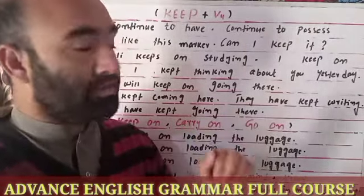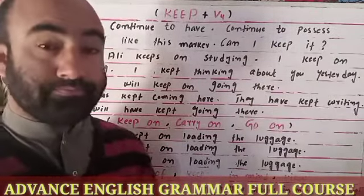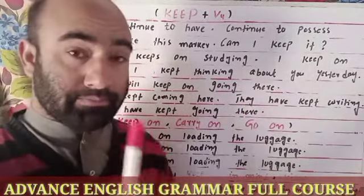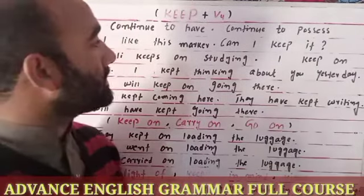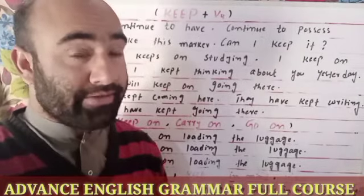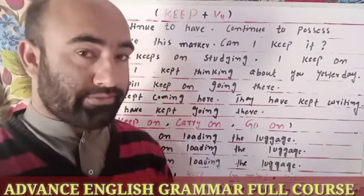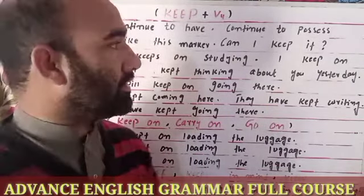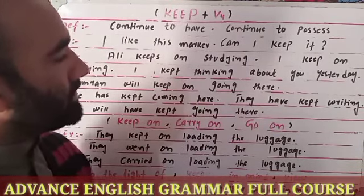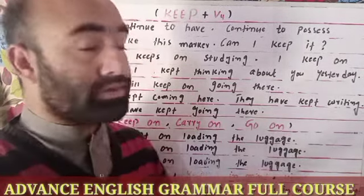Let's talk about the position of the verb with an example. For instance: 'I like this marker — can I keep it?' It means I want to continue having it for a long time. I want to keep this marker with myself. Now let's talk about other uses of 'keep' in different sentences and different tenses.